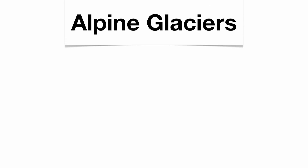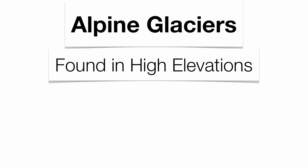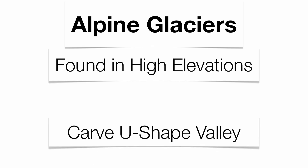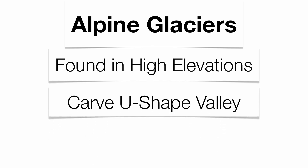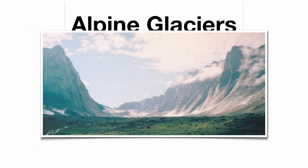Now you have a couple types of glaciers. The first type is what we call an alpine glacier. These are found in the upper elevations of mountain ranges, where snow is going to start building up. These things get so massive, they actually carve a U-shaped valley in the landscape, much like what you're seeing here.